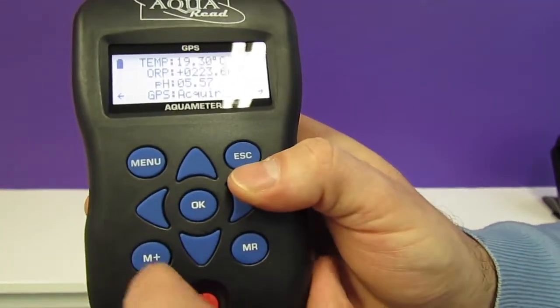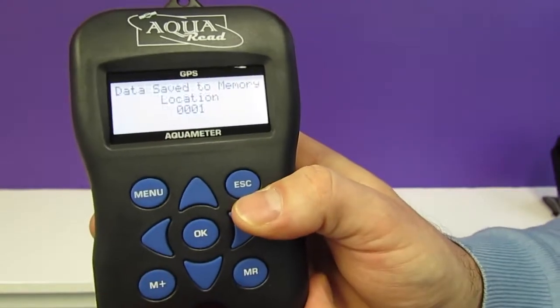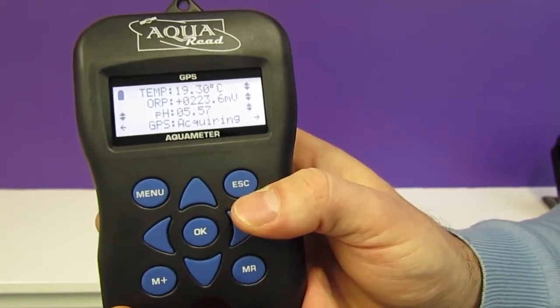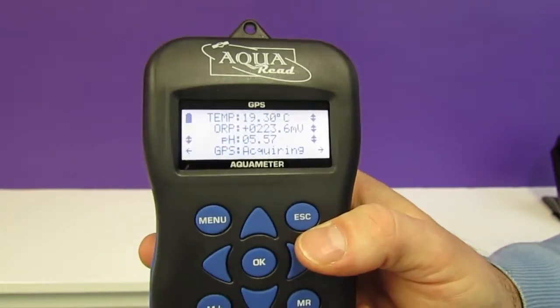You can record data by pressing the M plus button. That's all you need to do to record the entire data set and also the GPS coordinates of your current location.